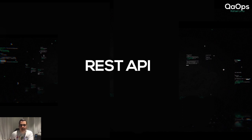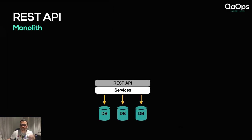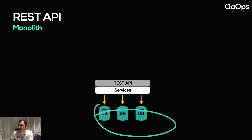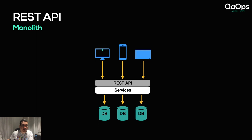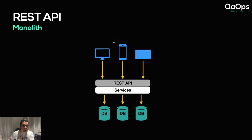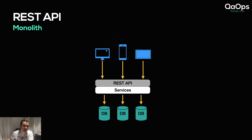Talking about REST APIs in a monolith application: you have the REST API, the services, and the databases at the bottom. You can access the application through a computer, a mobile device, and also a TV. The beauty of the REST API is that you can have the same application reached by any kind of device, regardless of whether it's mobile or not.